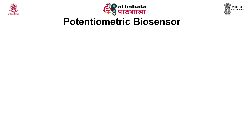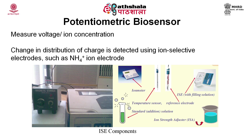Next are the potentiometric biosensors. These biosensors measure the change in voltage or ion concentration. The change in distribution of charge is detected using ion selective electrodes such as an ammonium ion electrode. The assembly comprises an ion meter as the ion selective electrode, and an ionic strength adjuster is always needed to provide the same conditions to the control and samples.